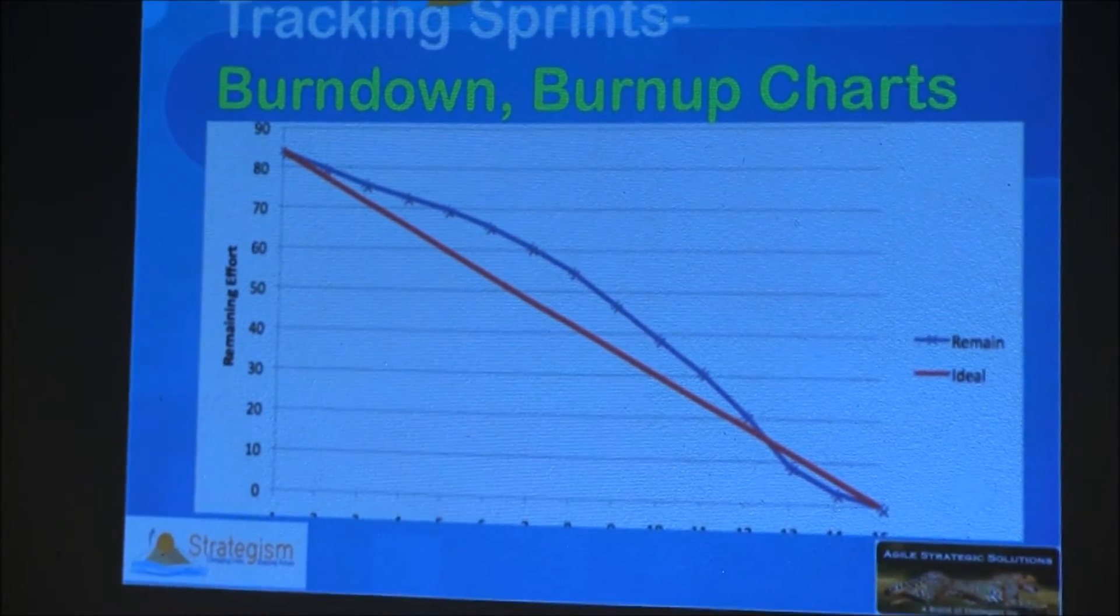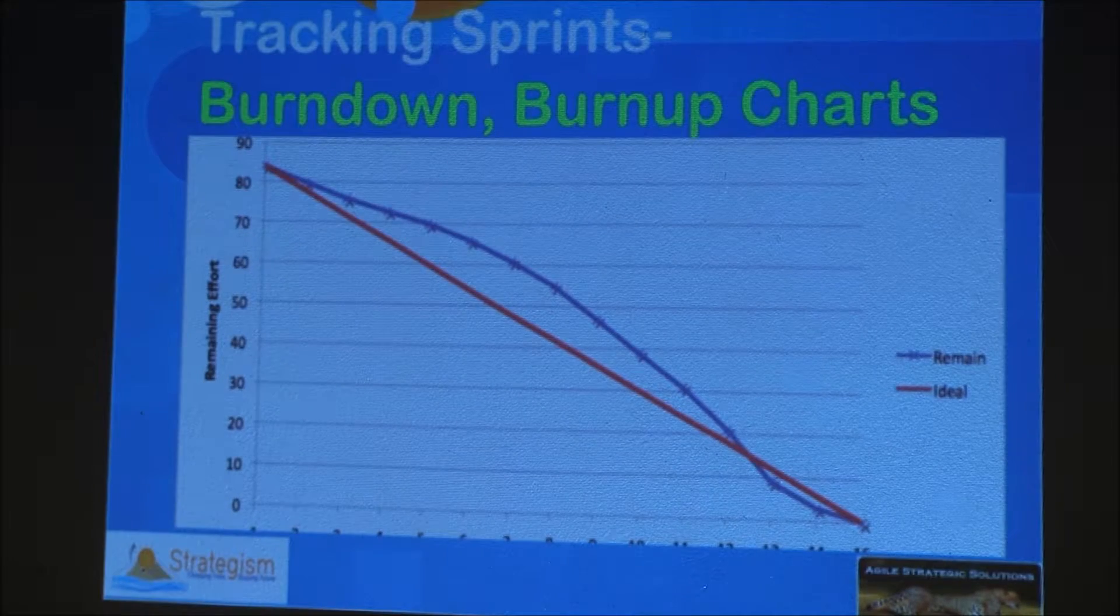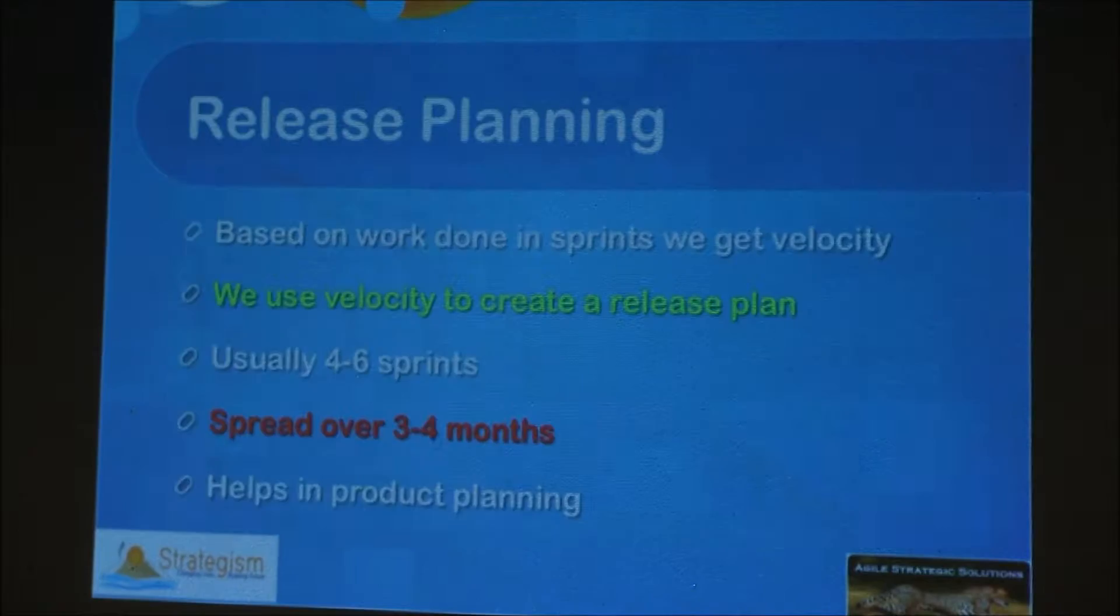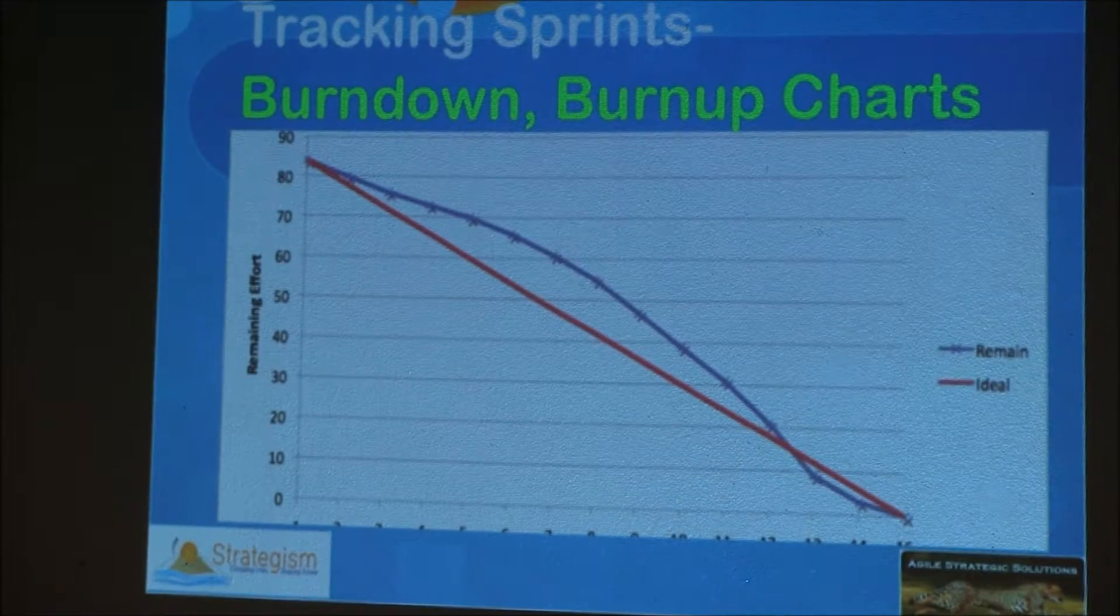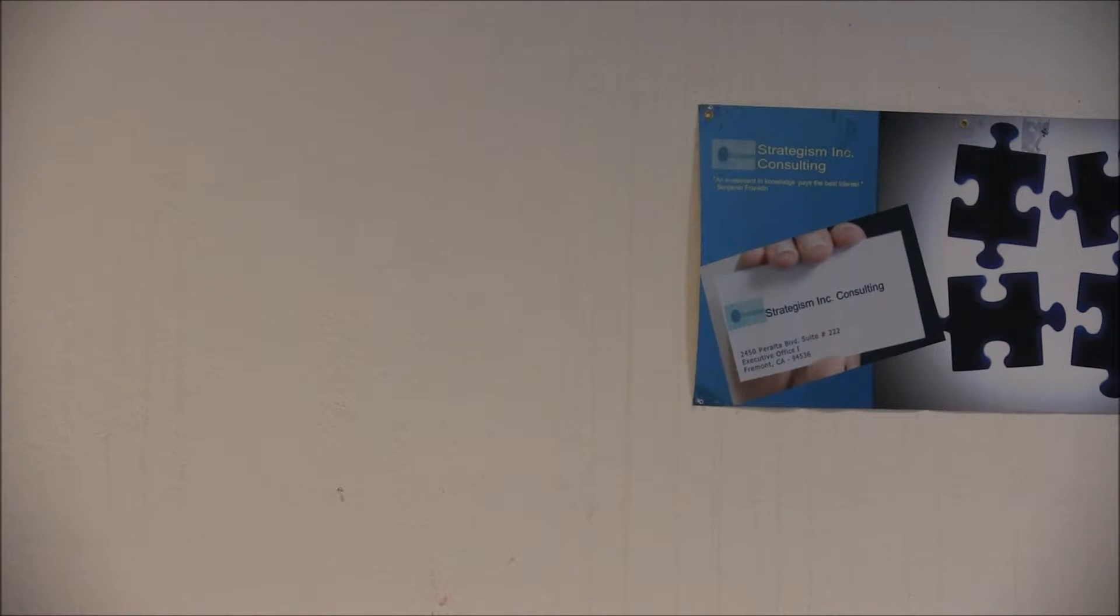So, create a burn down chart like this. How much is the remaining time, and how many sprints? Burn up and burn down? Burn up is like cumulative. Burn down is work remaining and time remaining. So you can have burn down for sprint, or you can have a burn down for the release. Burn up also you can have for the sprint, and you can have for the release.